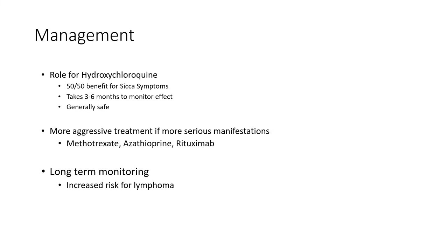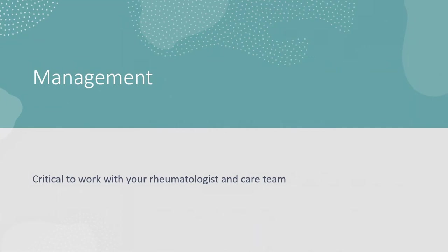Long-term, outside of medications, there is a slightly increased risk for certain types of cancer in people with Sjögren's syndrome, particularly lymphoma, and we do monitor for that in this population. Overall, Sjögren's can be a complicated condition, and it's really important to work with your rheumatologist and your rheumatology care team to ensure the best outcomes. For more on this or anything else related to rheumatology, please check out our website at albertarheumatology.com.